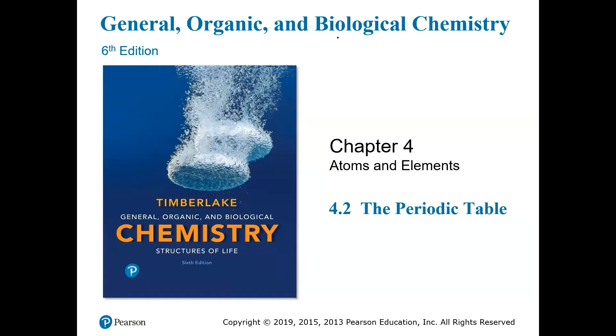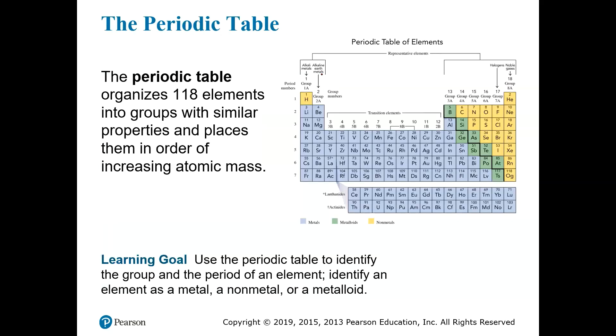This is chapter four of atoms and elements and section two is all about the periodic table. The periodic table organizes all 118 known elements into groups with similar properties and it also places them in order of increasing atomic mass or atomic number.